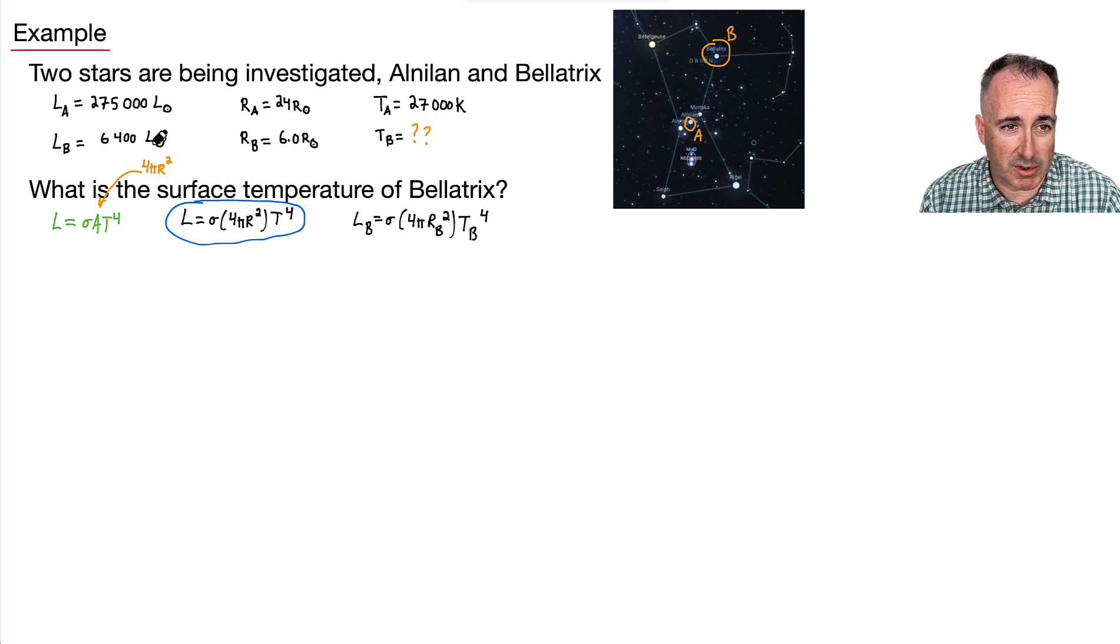I mean, I know the luminosity of B, but it's in terms of the sun. Do you see that this is the problem? I don't know the luminosity of the sun. I don't know the radius of the sun. So what am I going to do? Well, I'm going to use ratios. That's what I'm going to do.